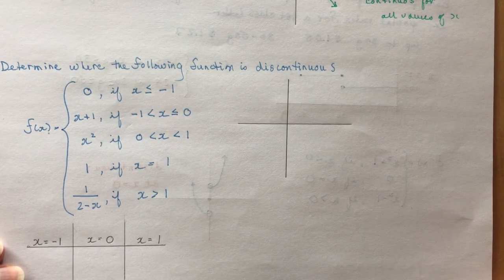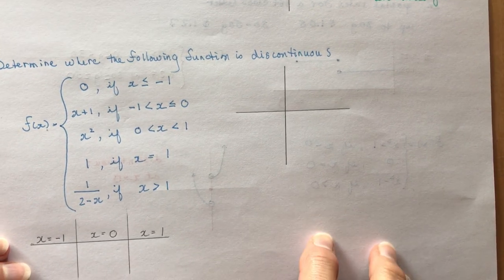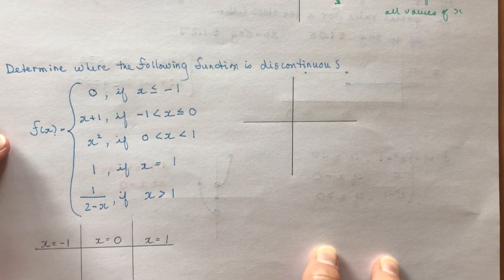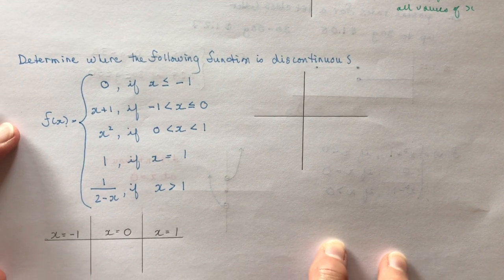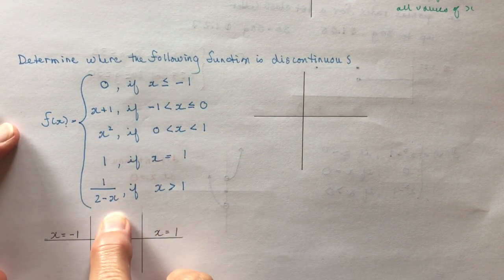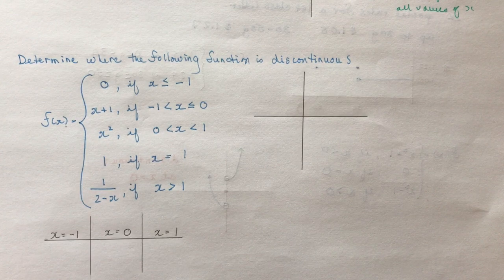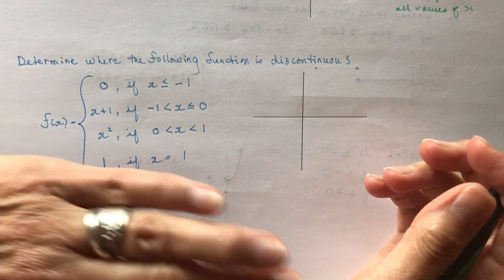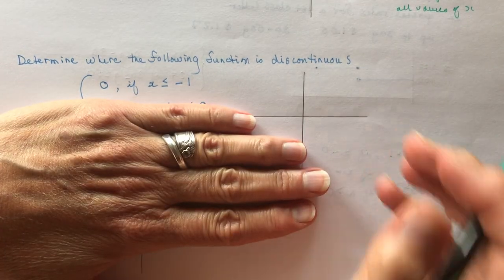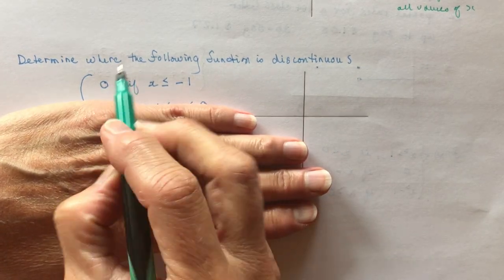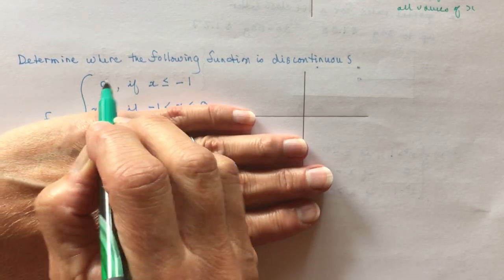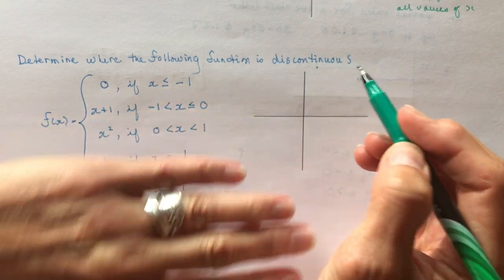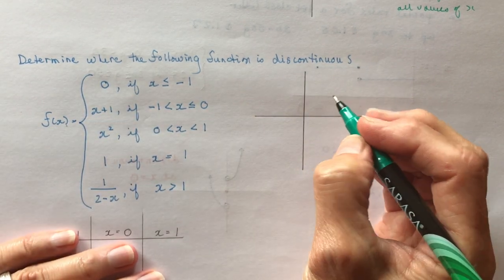Now for the most challenging question: determine where the following function is discontinuous. Don't freak — just work one piece at a time. The first part: f(x) = 0 if x ≤ −1. So we need −1 on the graph. Since it's less than or equal to, and the value is 0, everything to the left of −1 is zero — a horizontal line.